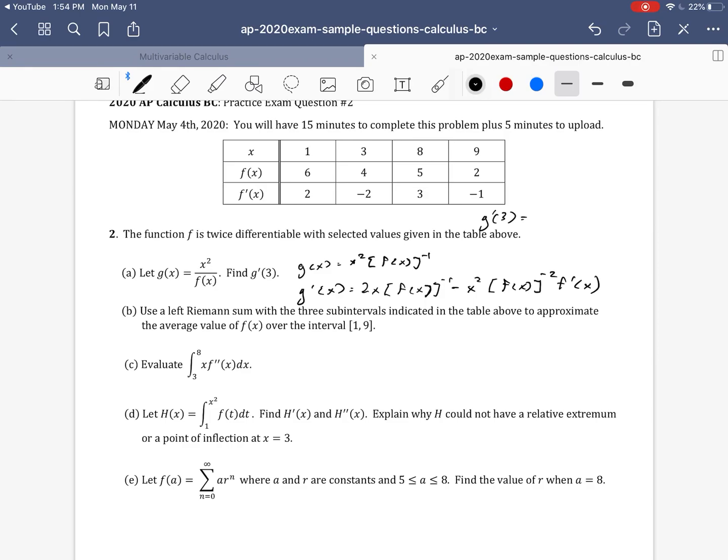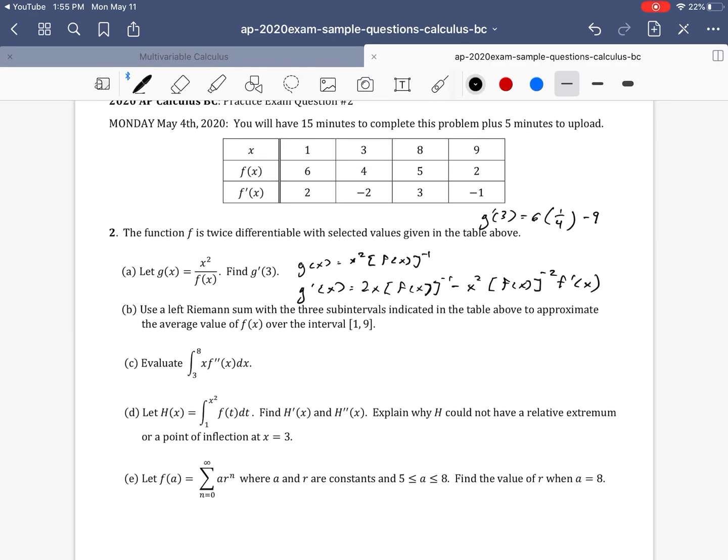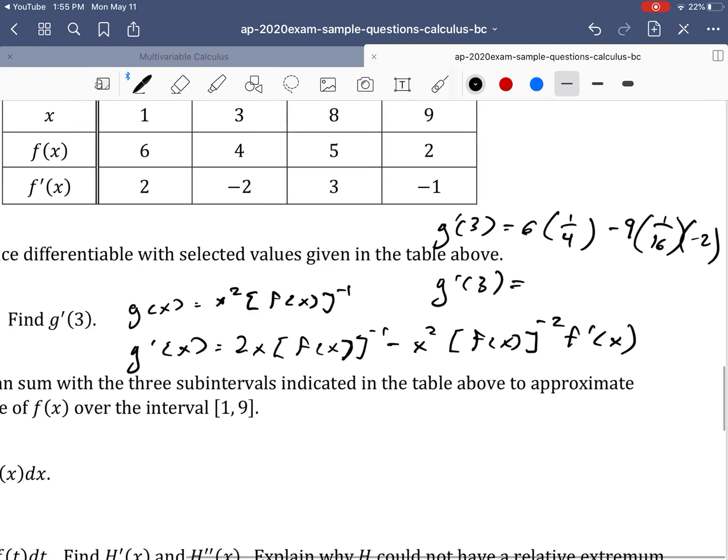Now we just need to plug in three for x. So that means g prime of three is given by two times three, from this part here. That gives us a six times f of three to the negative one. What is f of three? f of three is four. So we have four to the negative one, or a fourth, minus three squared, which is nine, times f of three to the negative two. So that's a sixteenth, because f of x to the negative one was a fourth, times f prime of three, and f prime of three, notice is negative two.